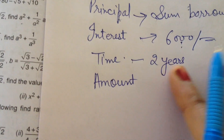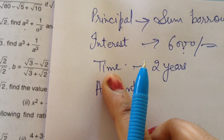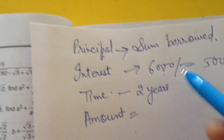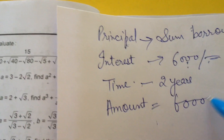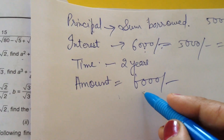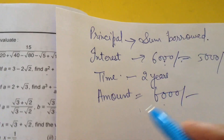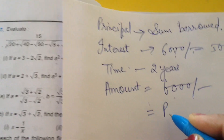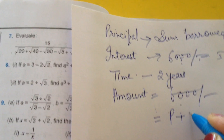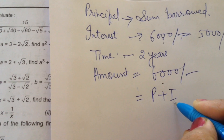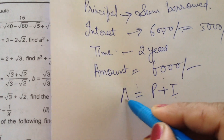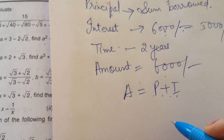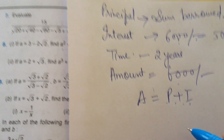And for how much time — that is known as the time period. Amount is equal to P plus I, that is, amount is equal to principal plus interest.